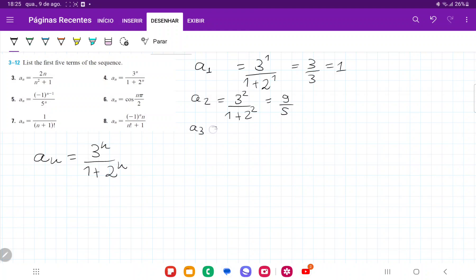a₃ is going to be 3 to the power of 3 over 1 plus 2 to the power of 3. That is 27 over 9, which equals 3.